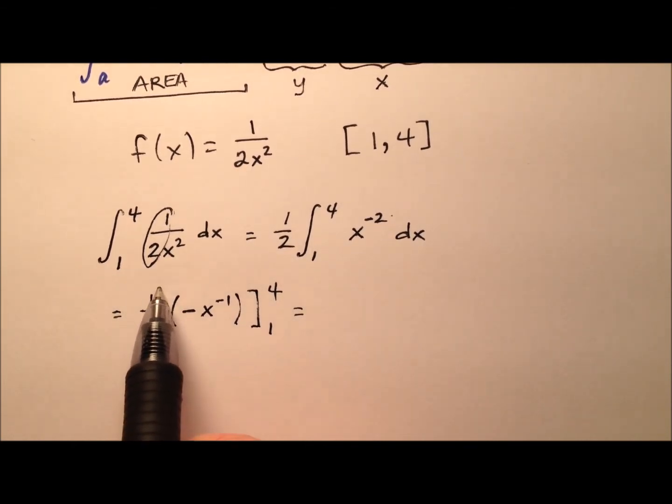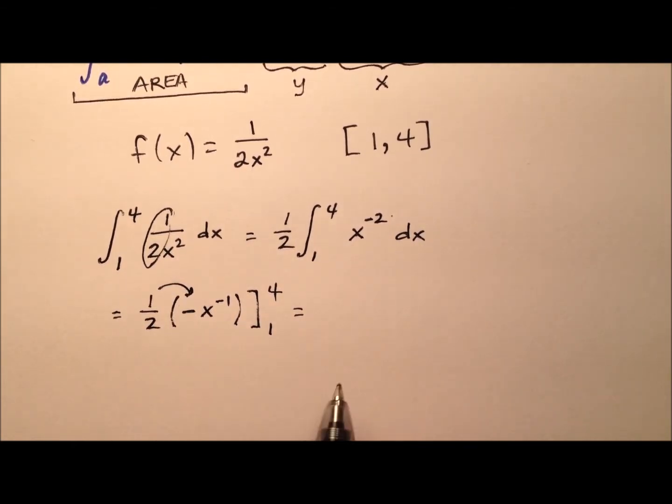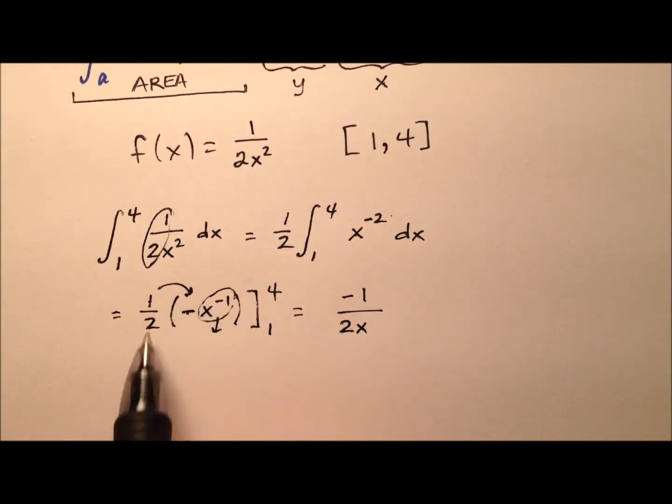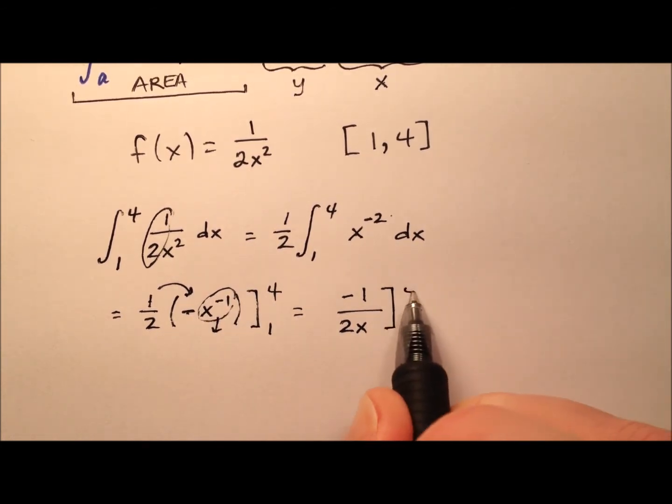So if you wanted to, we could maybe put that one half back through, or kind of polish this up a little bit. So really, it's going to be a negative one, so negative one over, and it looks like 2x, because this negative exponent actually is going to put it back down on the denominator with that two, from 1 to 4.